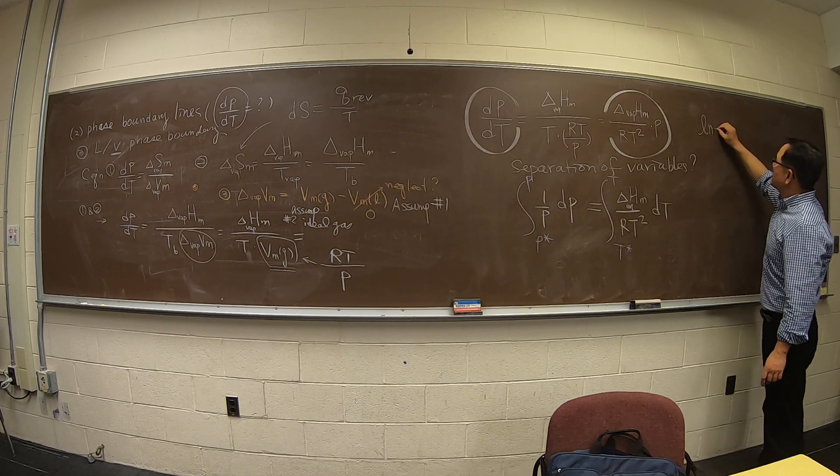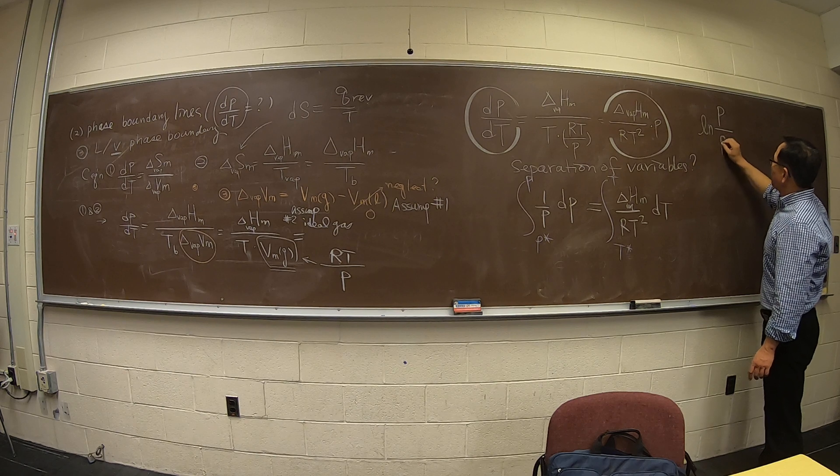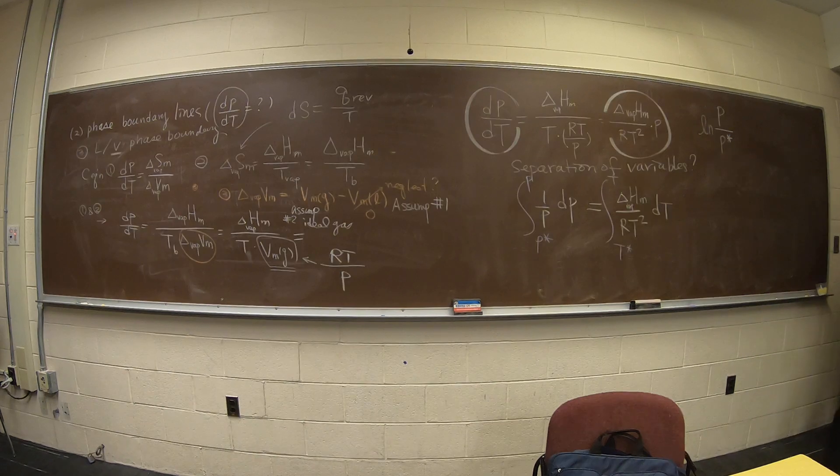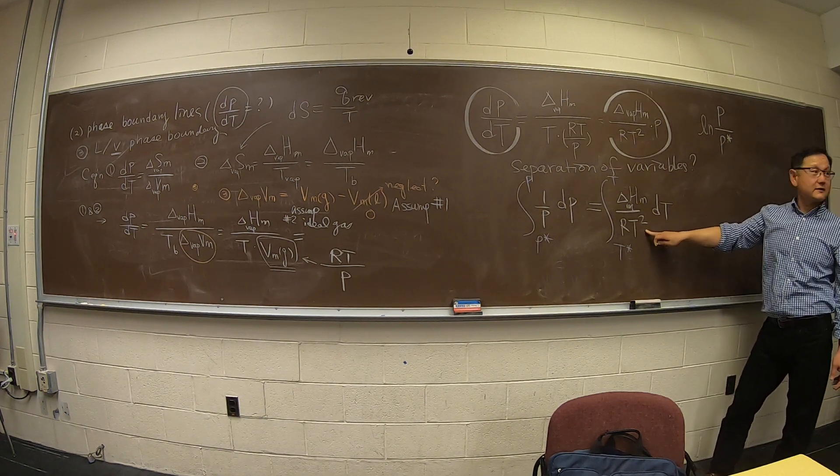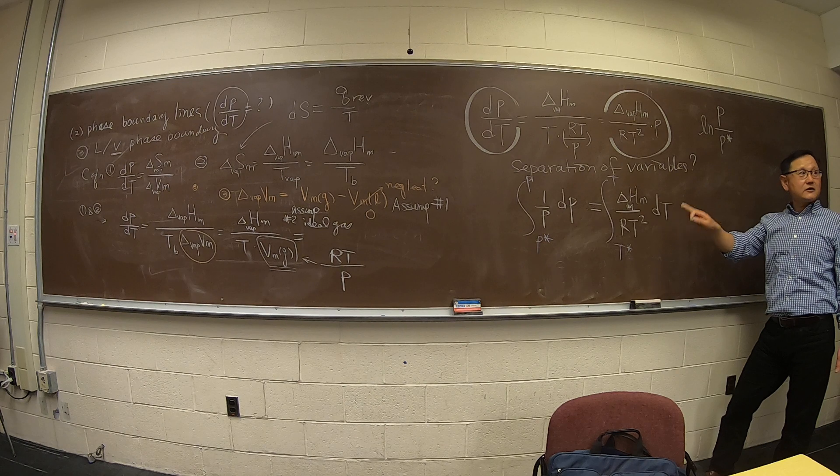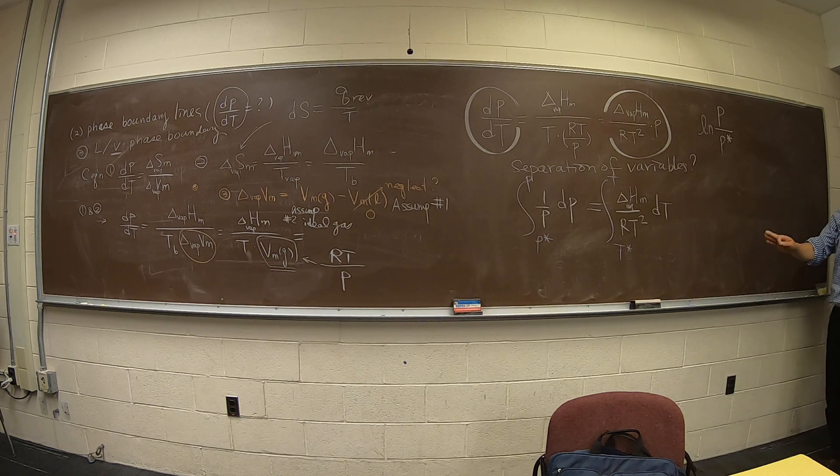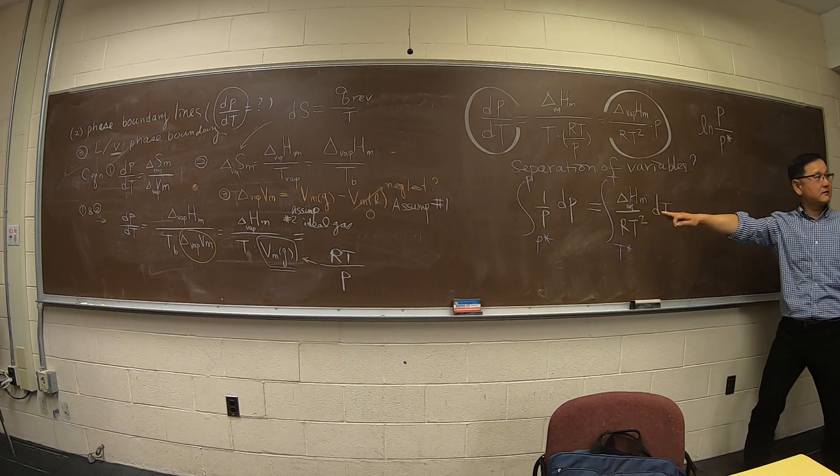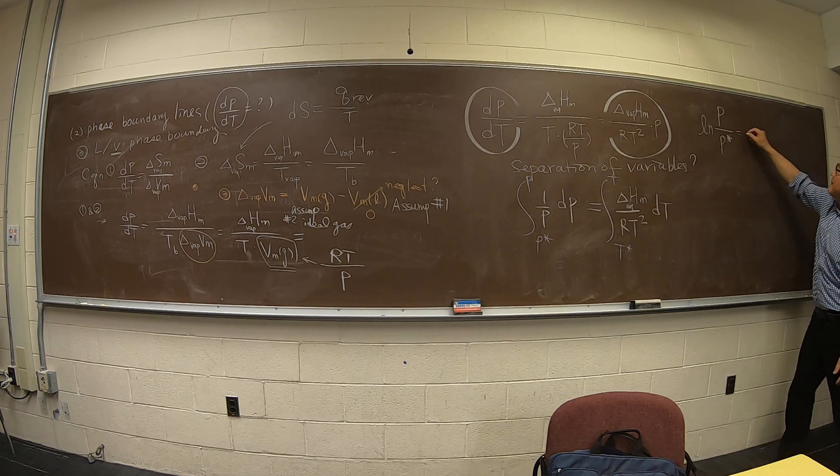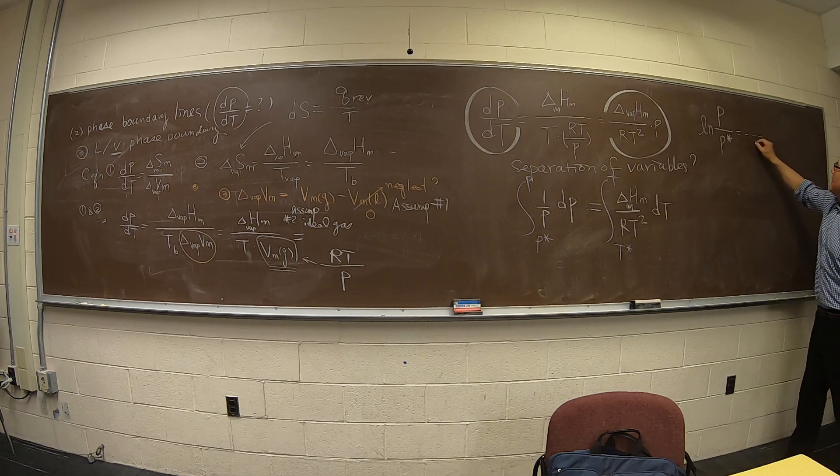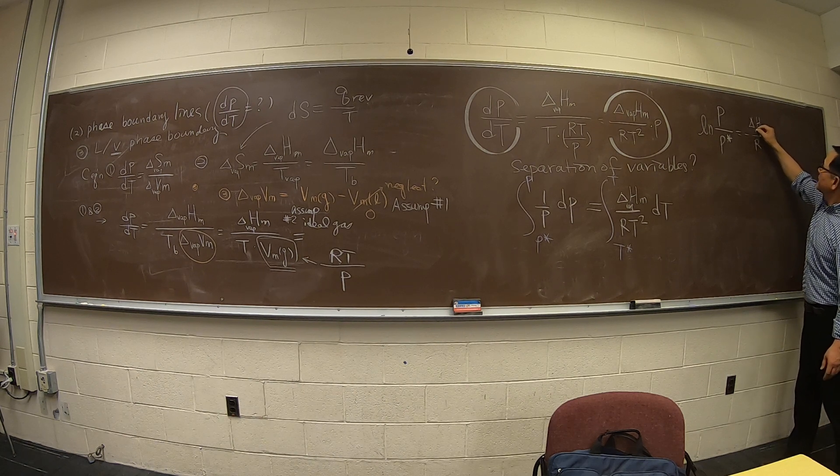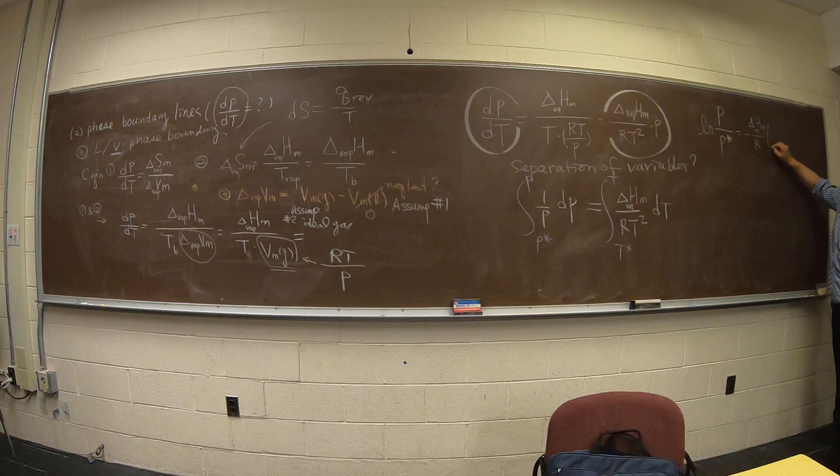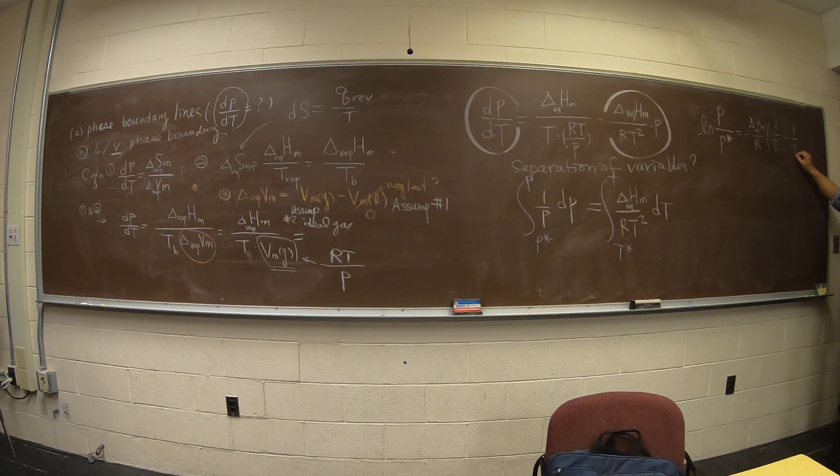Natural log P over P*. This is the integration of one over x dx, which is minus one over x. So it's one over T with a minus sign in front, therefore it's minus R delta H vaporization, one over T minus one over T*.